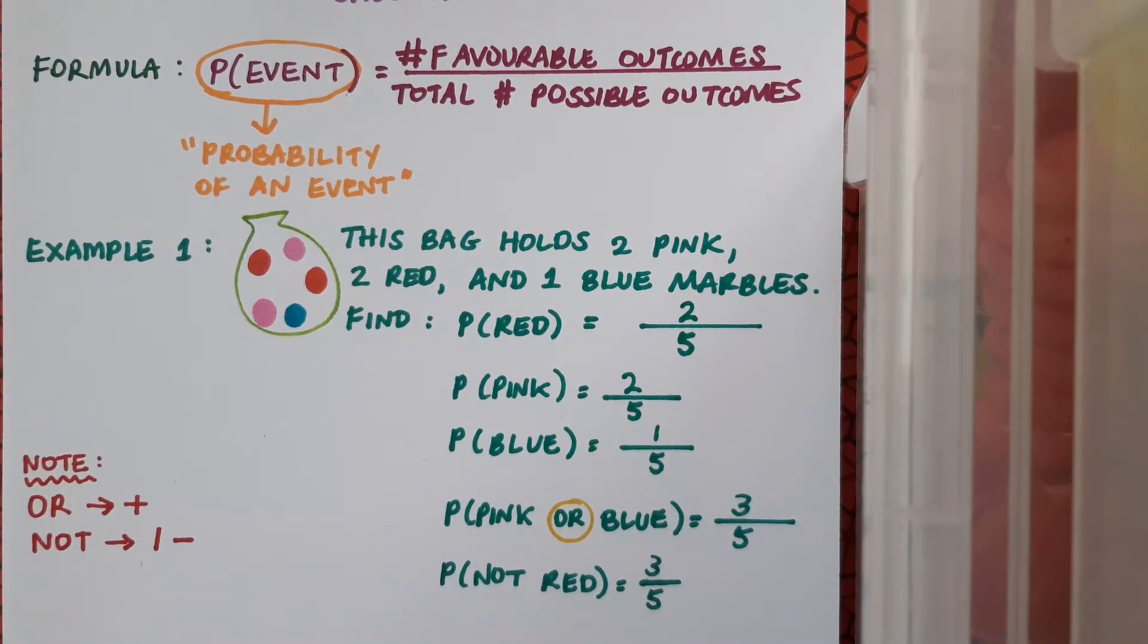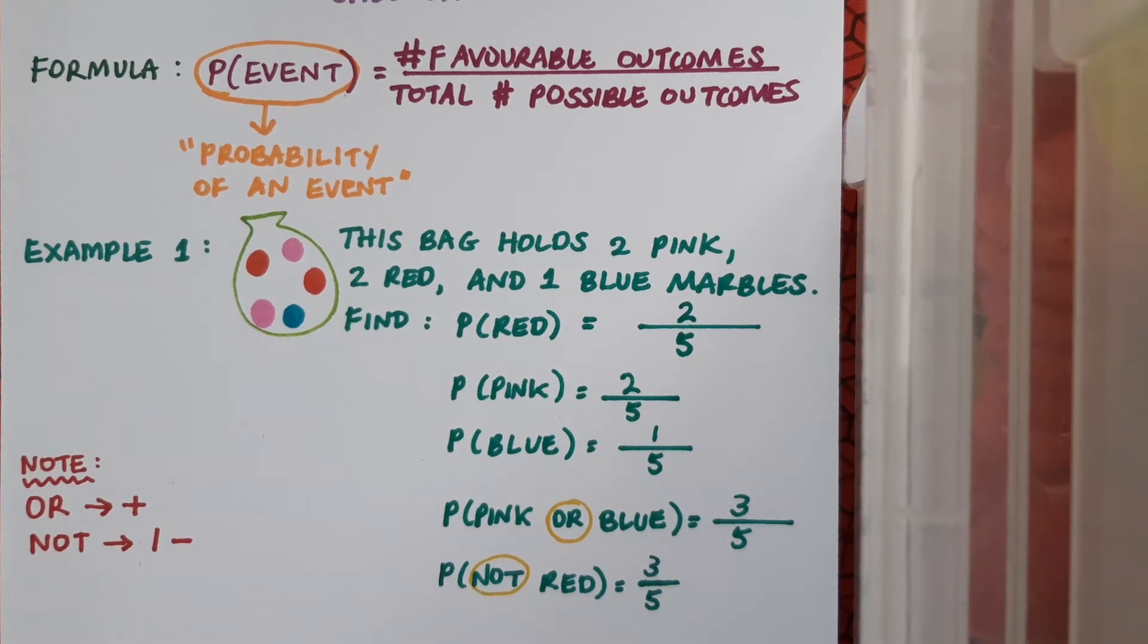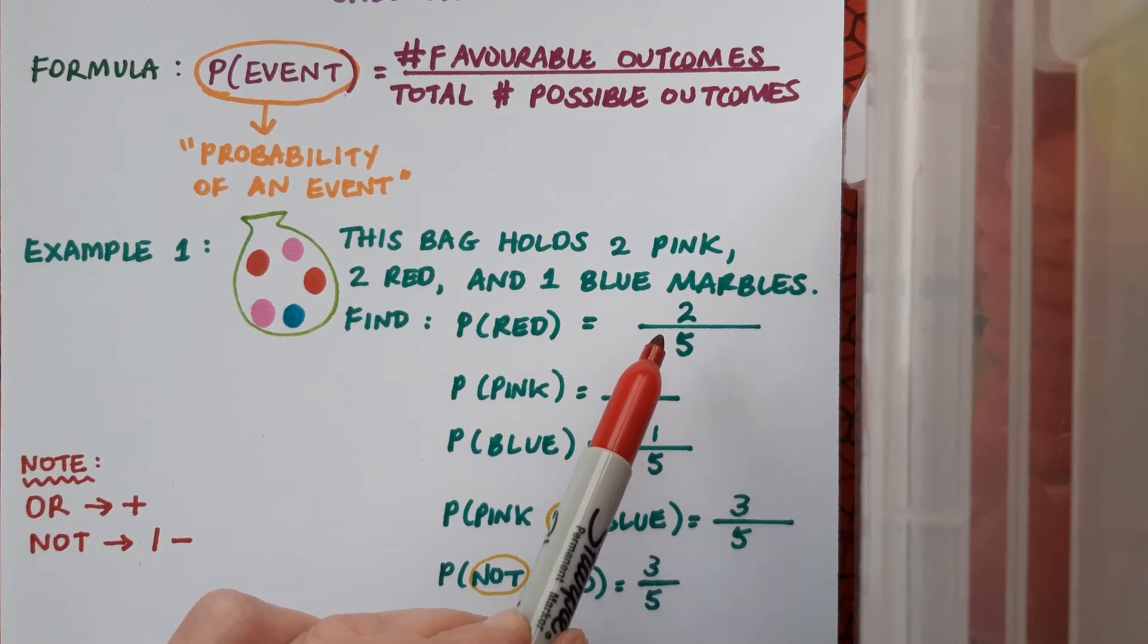Also, NOT in the context of probability usually indicates that we can find that solution by subtracting the probability of the event occurring from one. For example here, the probability of not selecting a red marble is three over five, and that's the same as one minus the probability of selecting one. So one minus two over five is the same as three over five.